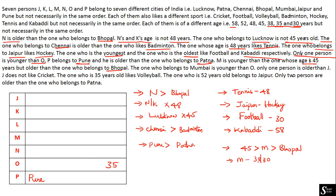Since M must be older than the Bhopal person, there must be at least one person younger than M. If M were 30, no one could be younger than M from the remaining ages. Therefore M has to be 38 years. The Bhopal person must then be younger than 38 years, so Bhopal person can be 35 years or 30 years — we hold this for now.